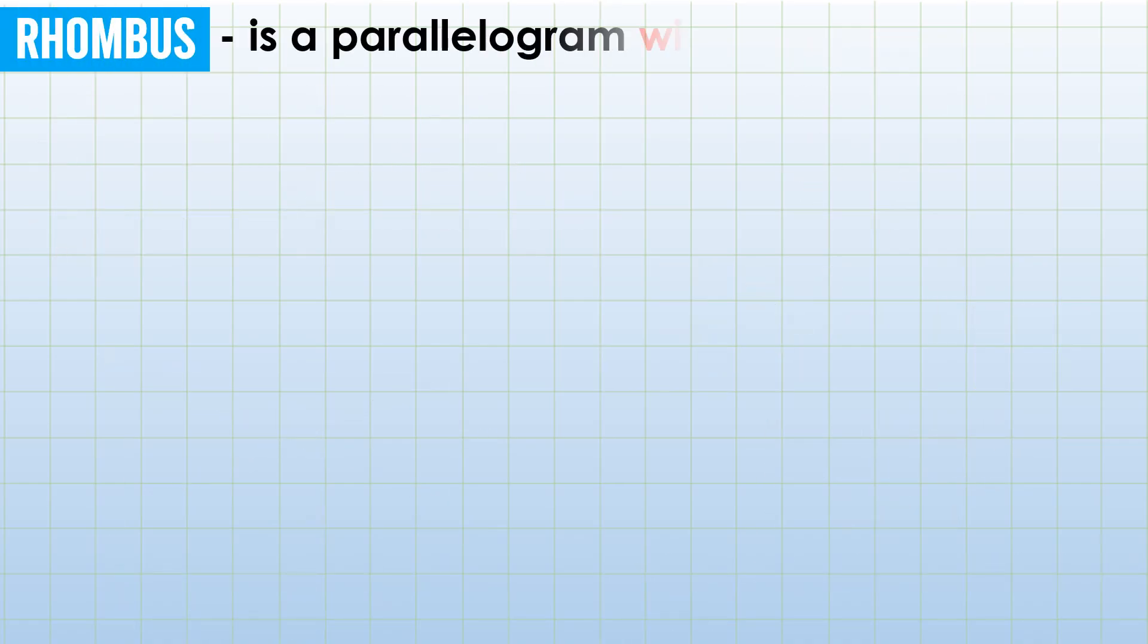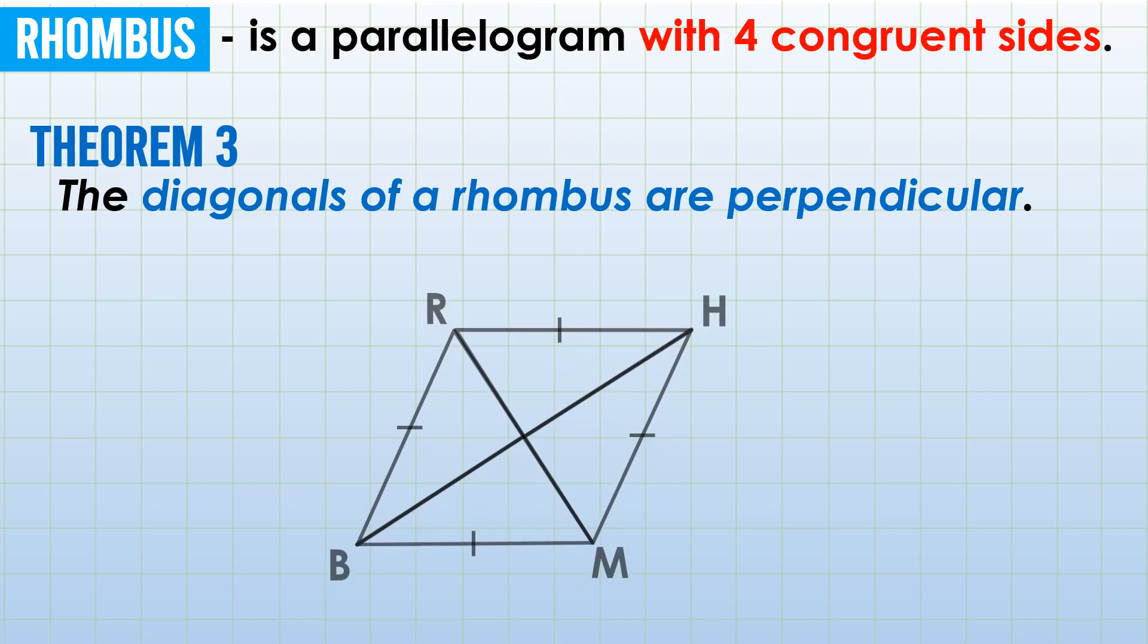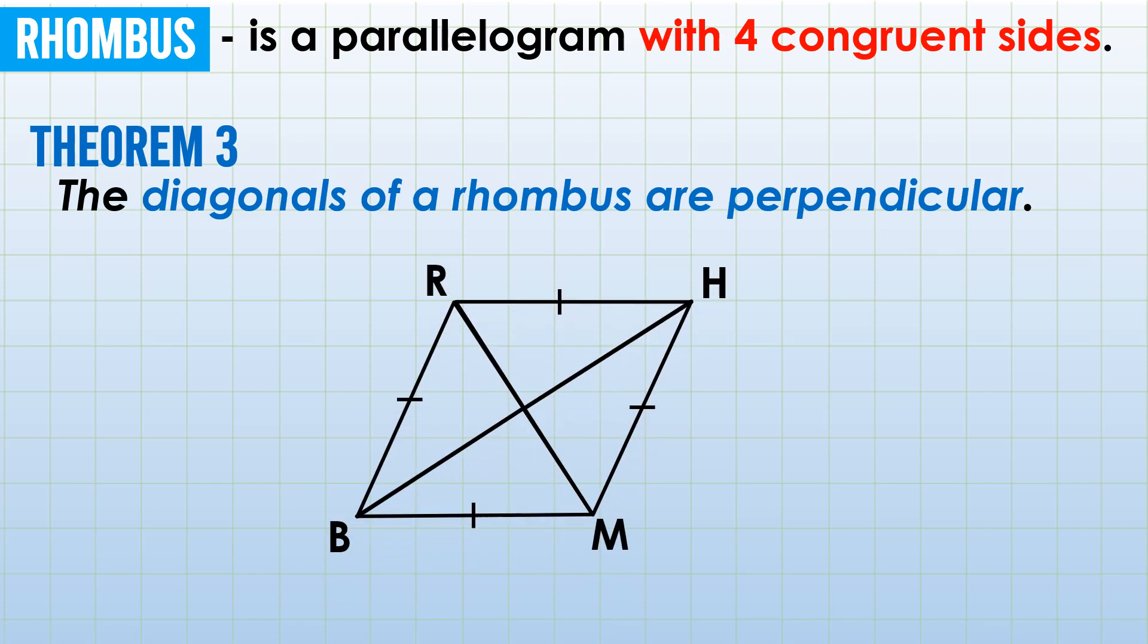Next, we have rhombus. Rhombus is also a parallelogram with 4 congruent sides. Earlier it was 4 right angles, right? So, Theorem 3: The diagonals of a rhombus are perpendicular. When we say perpendicular, they make a 90 degree angle. So this is our rhombus. The four sides are congruent. And at the center, those four angles—this angle, 2, 3, 4—those four are all right angles. So you have four right triangles there.